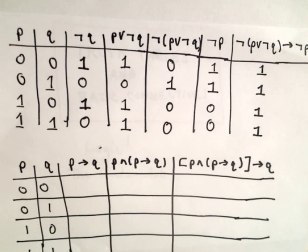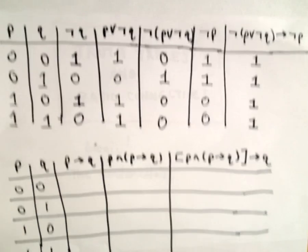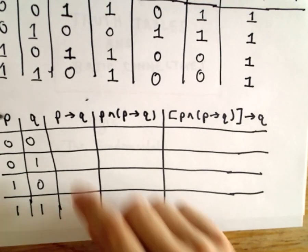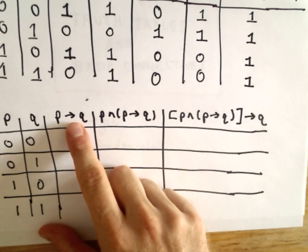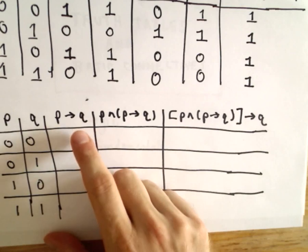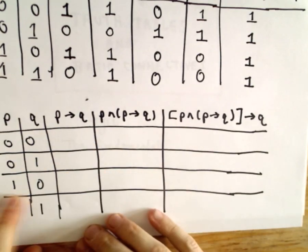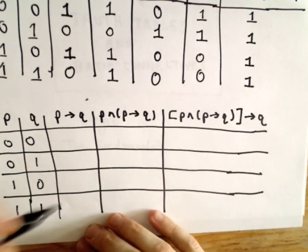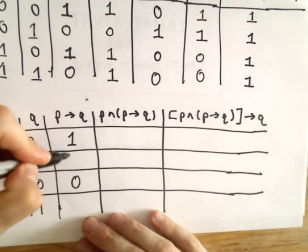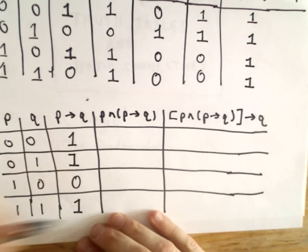All righty. Okay, so let's keep going here. Let's look at our next statement. Okay, so again, P implies Q. We said that that's only going to be false if the first statement is true but the second one is false. So here we'll have 1, 1, 0, 1.